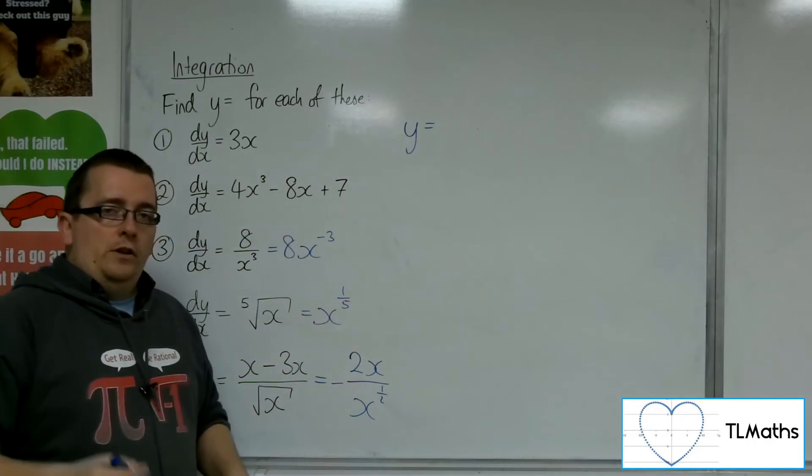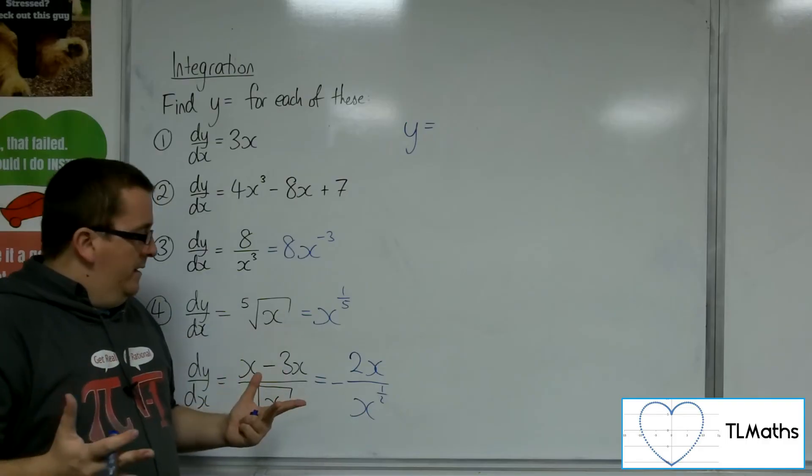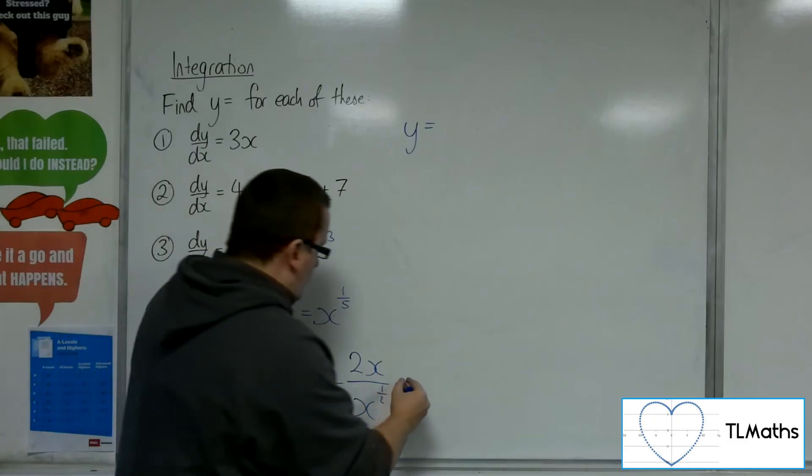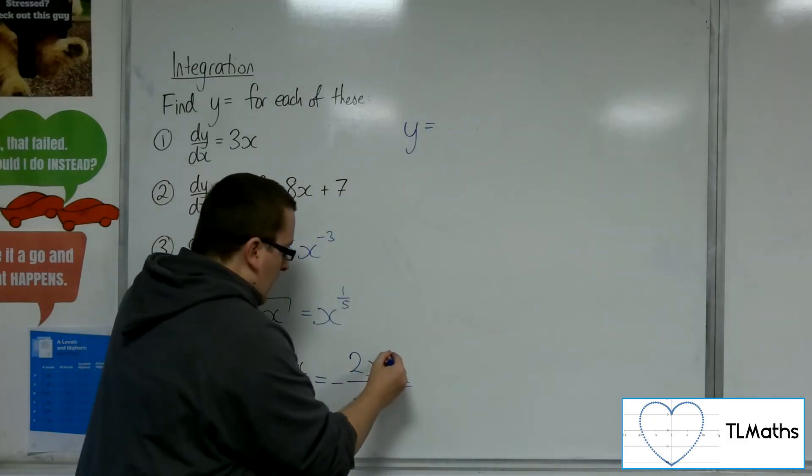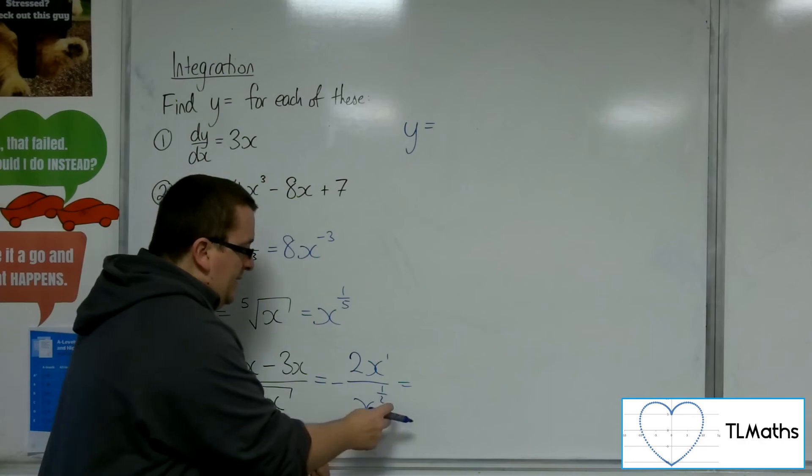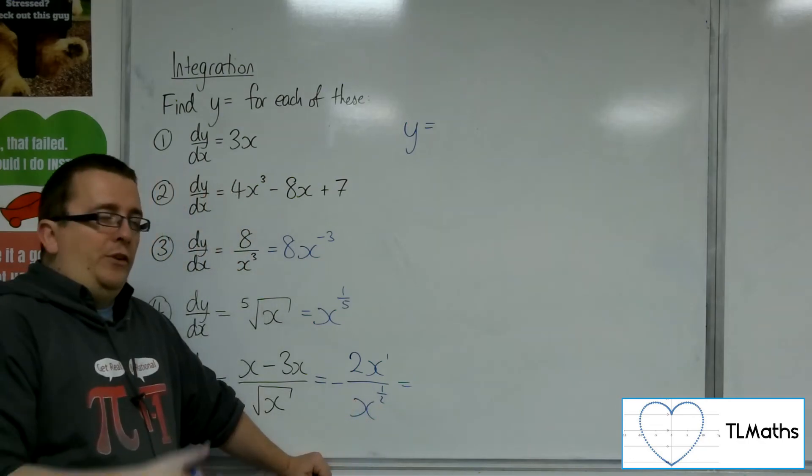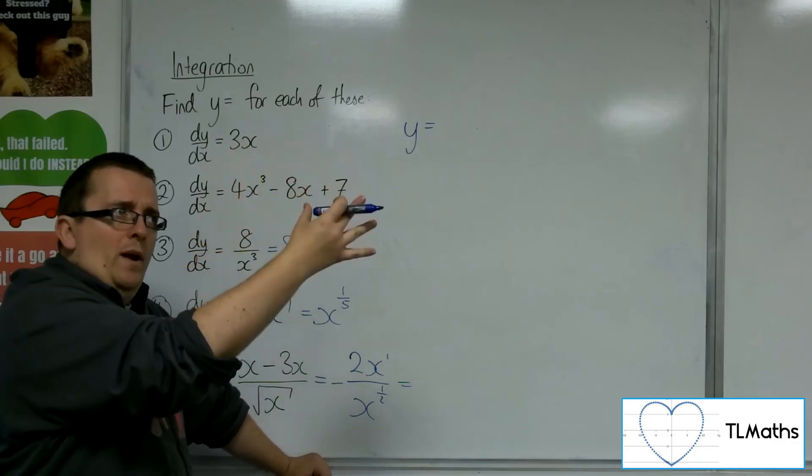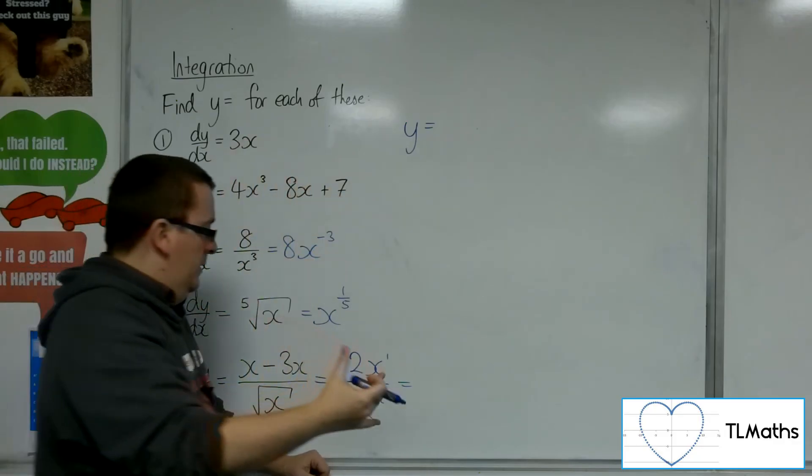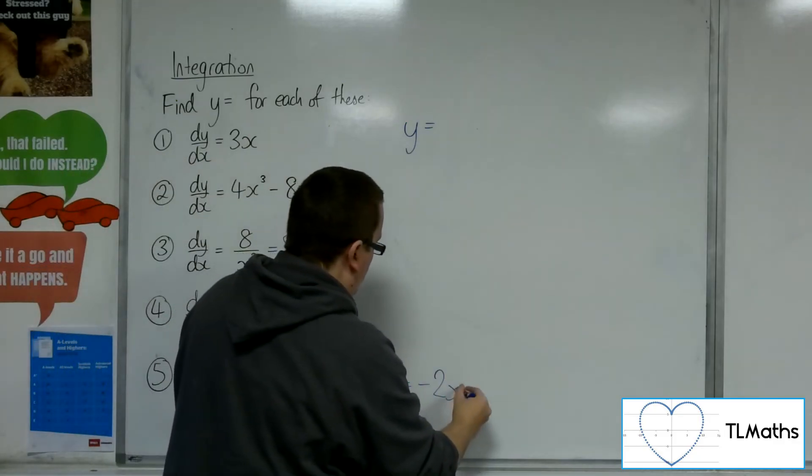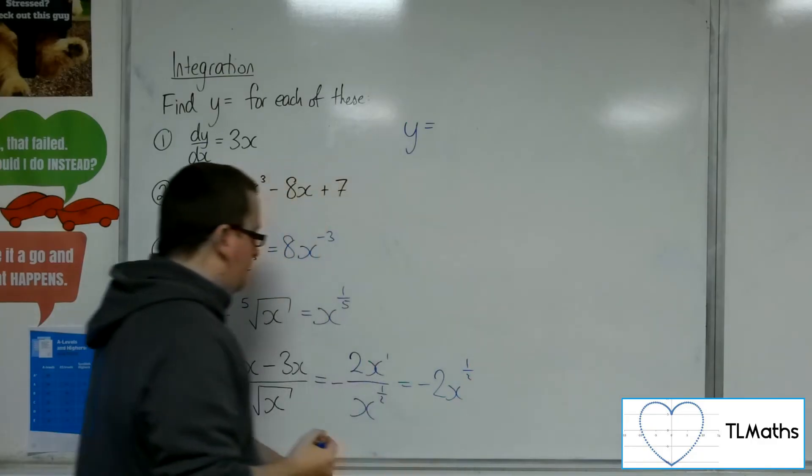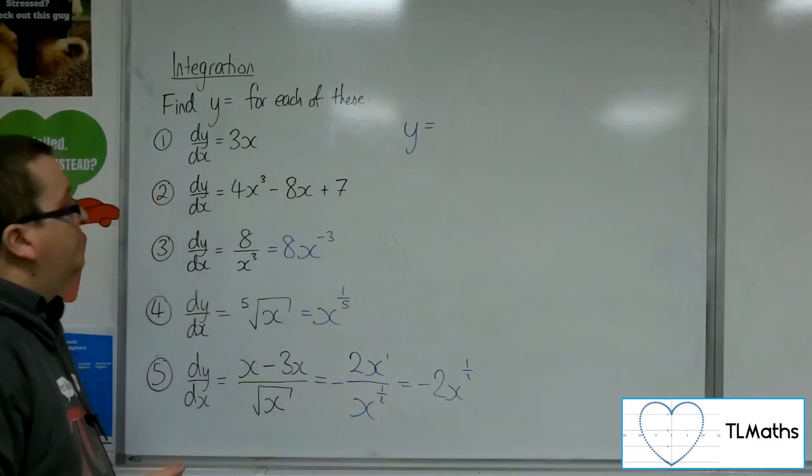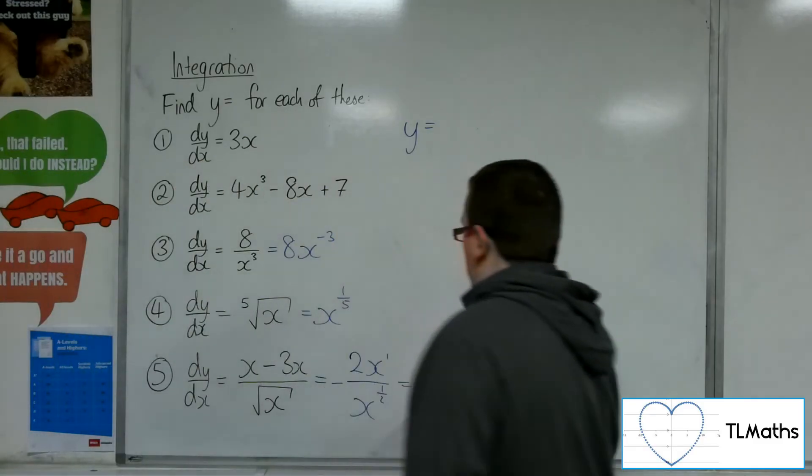Now, it's still not in the format of ax to the n, because I've got this fraction with x on the numerator and the denominator. So I'm going to have to think about, well, up here I've got x to the 1, down here I've got x to the half. So x to the 1 divided by x to the half is x to the 1 take away a half, which is x to the half. So this is minus 2x to the half. So this simplifies to this. So this is what I want to integrate.